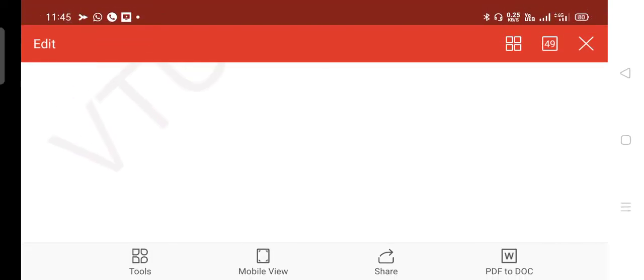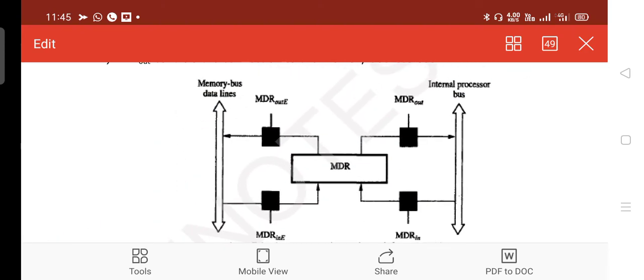Please try to understand this concept. The concept is very simple. MDR is connecting towards two different buses. One is towards internal processor, as you are aware of. The other one is memory bus address line, or memory bus data line you can say.